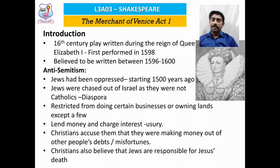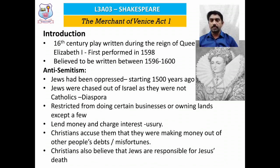In 16th century England, it was reigned by Queen Elizabeth I, and this play is a 16th century play, first performed in the year 1598. The composition of the play was not very clear and it was believed to be written between 1596 to 1600. This play, The Merchant of Venice, deals with an important theme called anti-semitism. We will discuss all the major themes at a later stage.